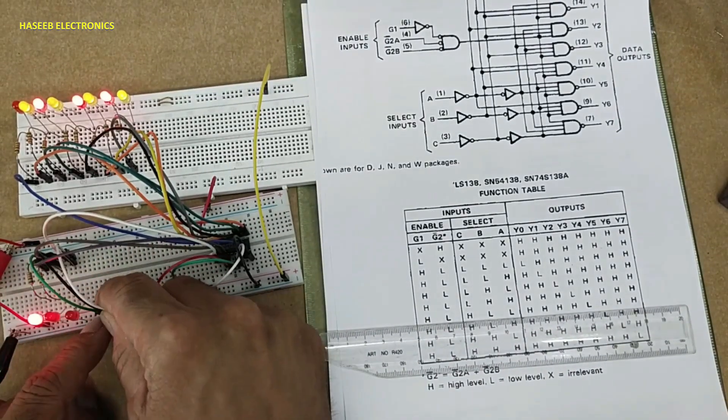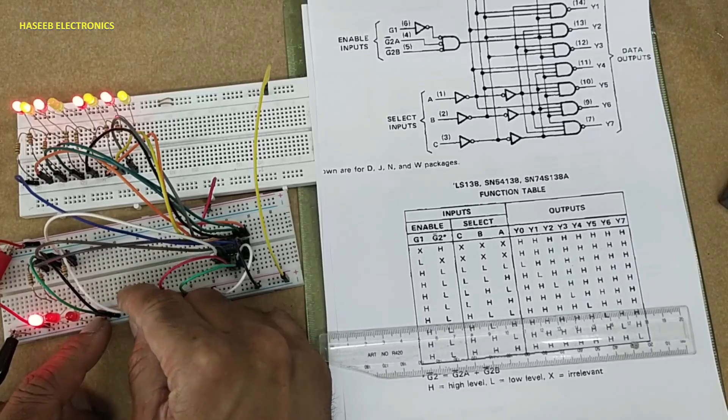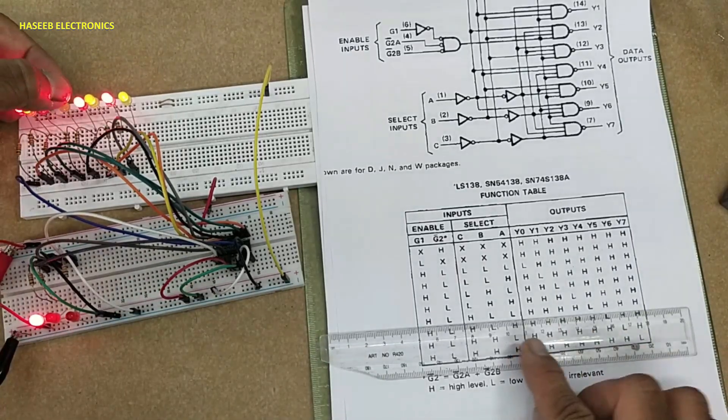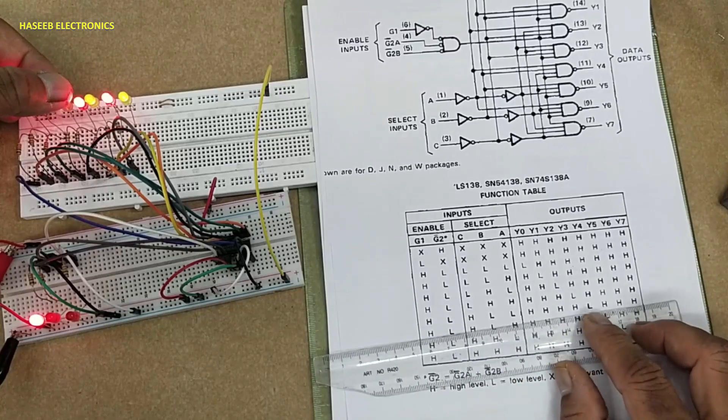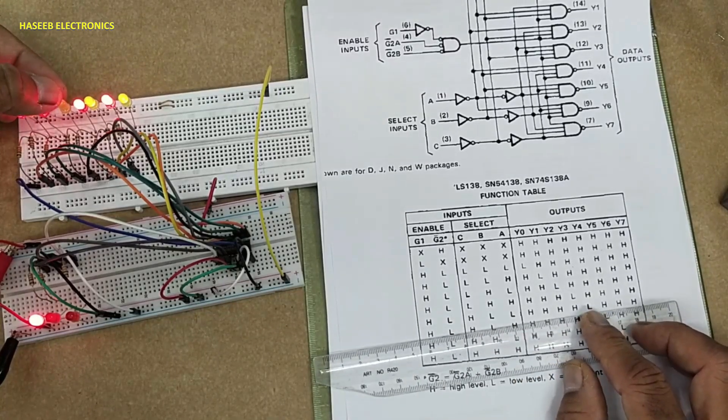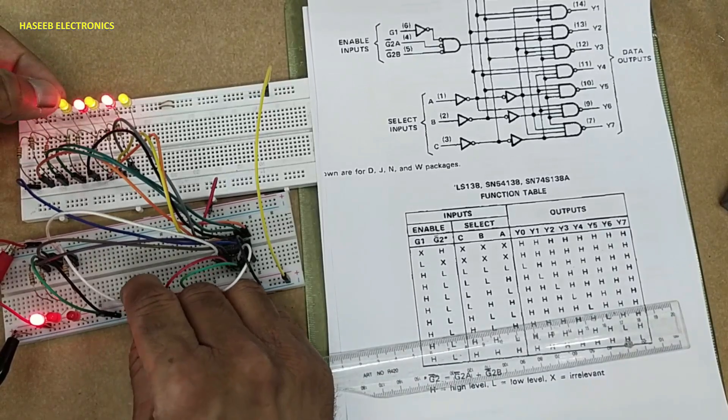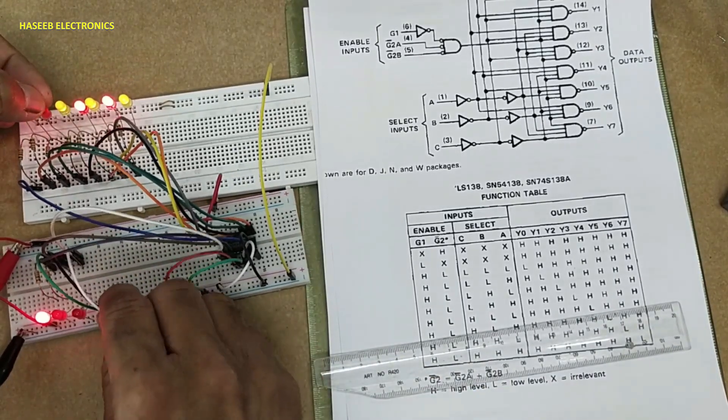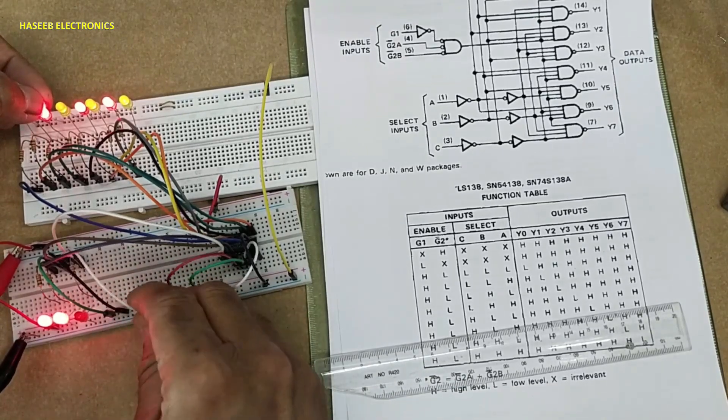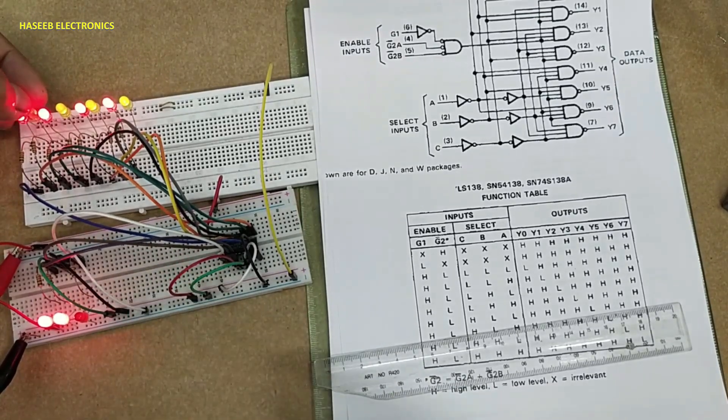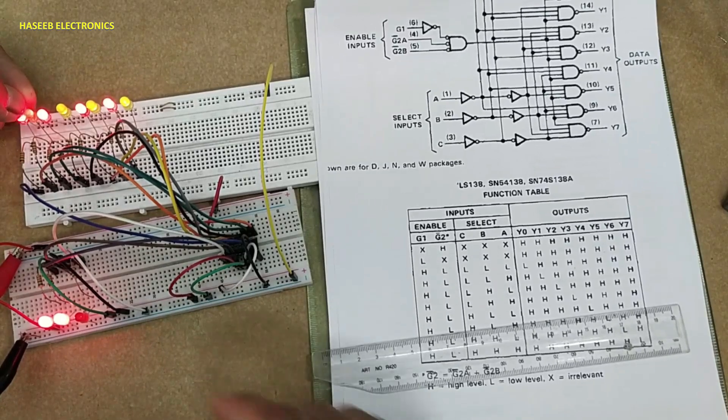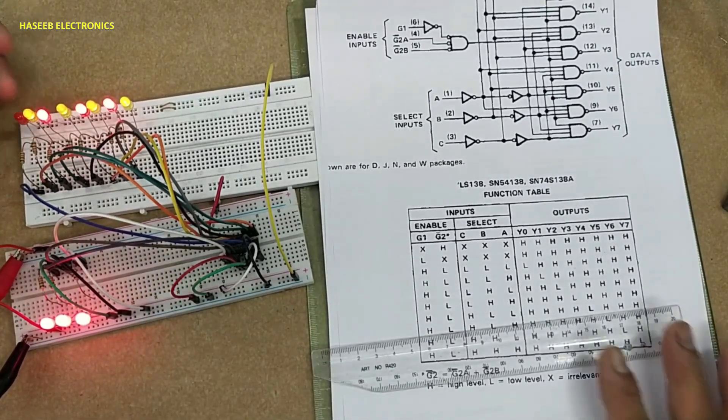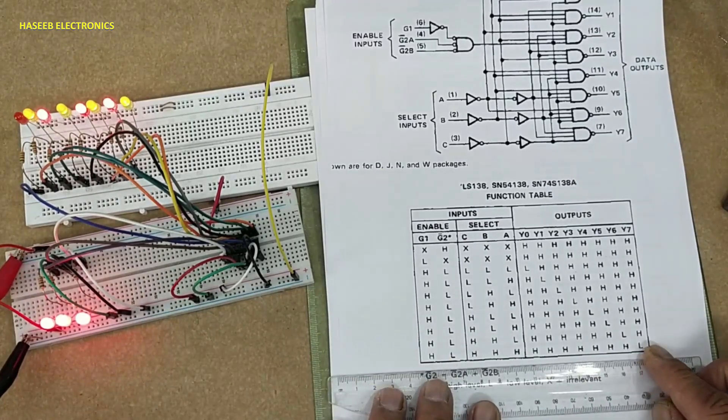Low, high, high—Y4 active low output. Then 101, then 110 this line. Then all three inputs are high, the last output is low. So this is the working principle of three-to-eight line decoders.